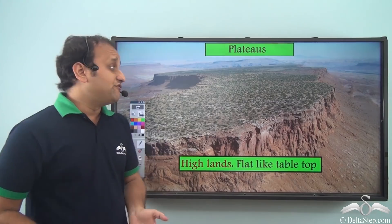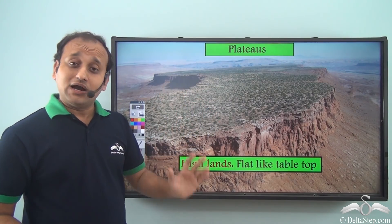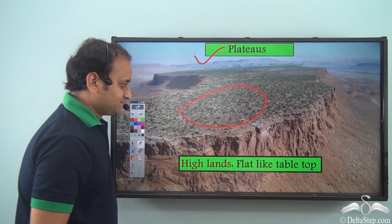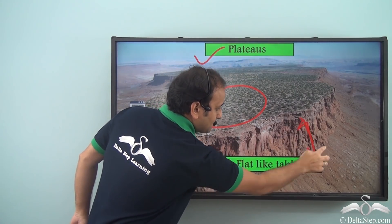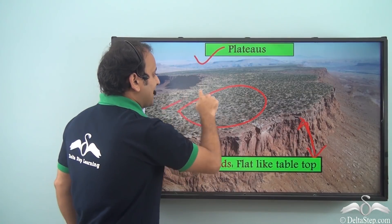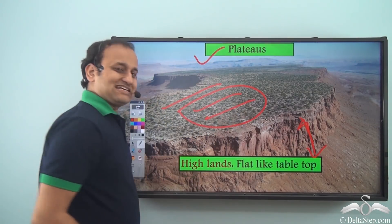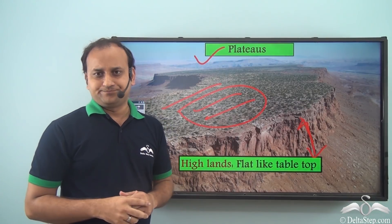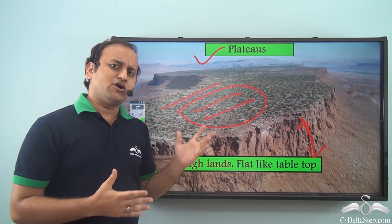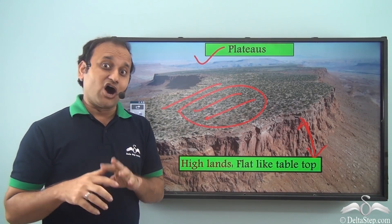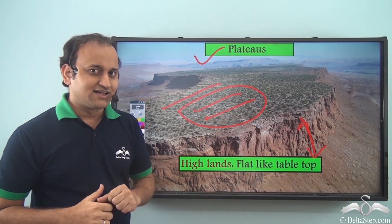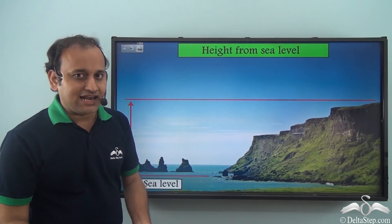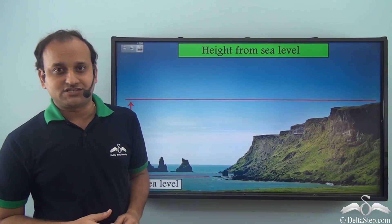Highlands which are flat are called plateaus. This is a plateau here — you can see this is a highland but it is flat at the top, just like a table top, and that is why they are called plateaus. Now you must be wondering how do we know that something is a highland?